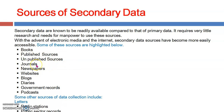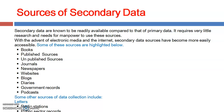Newspapers are regularly and daily published in every country by different organizations and publishers, and you can collect data from them. Websites on the internet are also a key source — you can google or use different browsers to find information on websites. Then we have blogs, where people share information, and personal diaries and log diaries, which contain personal observations and experiences.